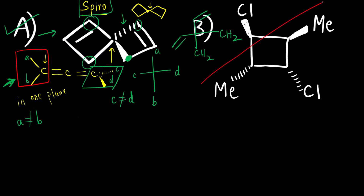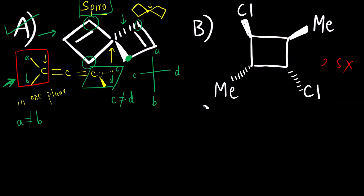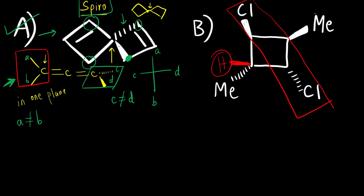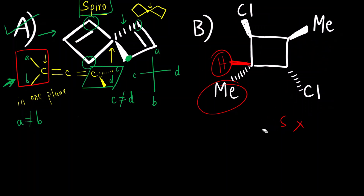Now option B. If you try to draw a plane of symmetry — suppose I draw this plane — above the plane there is Cl and below there is Cl, but above the plane on one carbon there is hydrogen and on the other there is Cl. So this is not a mirror plane; the plane of symmetry is absent. If you draw another plane of symmetry, above the plane there is hydrogen but on the opposite side there is methyl, and below the plane there is methyl on one side and hydrogen on the other. So that is also not a mirror plane. Plane of symmetry is absent — but if you mark option B as chiral, your answer will be incorrect.